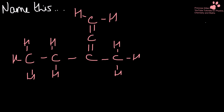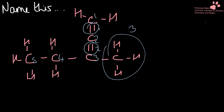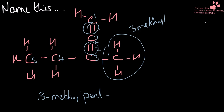Name this one. I'm going to start numbering up here — one, two, three, four, five — because I want my functional groups to have the lowest number possible. I have a double bond on one, a double bond on two, and a three-methyl as well. So that gives me 3-methylpenta-1,2-diene.